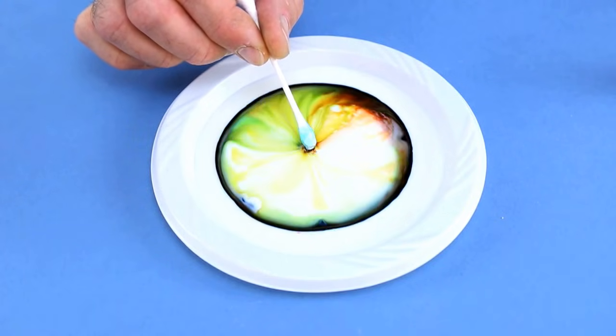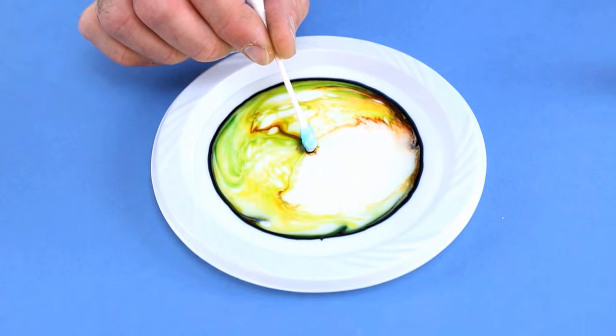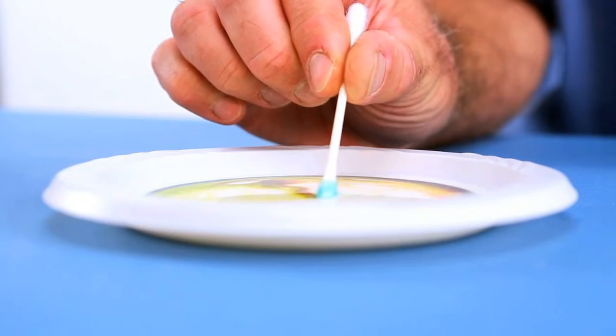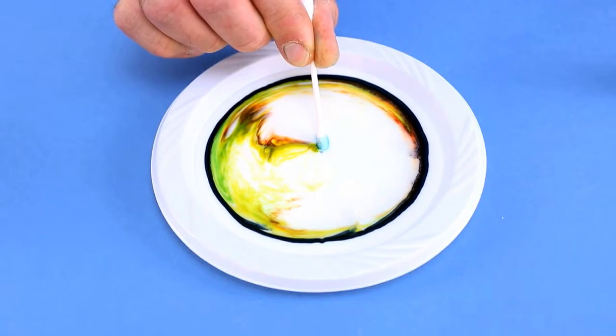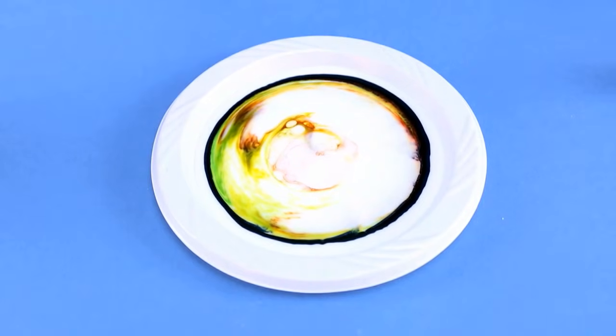Just barely touch it and watch what happens. It's pretty cool. You can leave it there and watch the colors move. Or you can dip it down to the bottom because sometimes the food coloring gets to the bottom of the milk. It's a little heavier than the milk and you might get some good reaction that way.